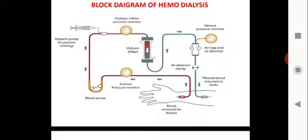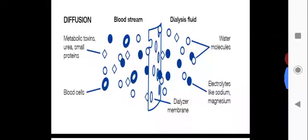Now let's look at the working of a dialyser. The dialyser works on the principle of diffusion. The bloodstream consists of metabolic toxins, urea, small proteins, and blood cells. The blood cells should not diffuse into the dialysis fluid; only waste materials such as water molecules, electrolytes like sodium and magnesium, and urea should diffuse into the dialysis fluid through the dialyser membrane, which purifies the blood by removing waste materials.